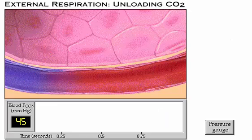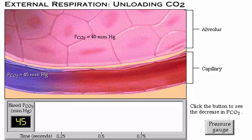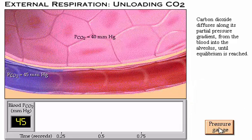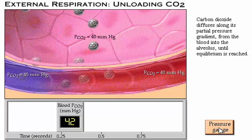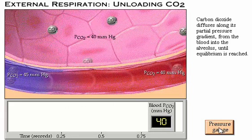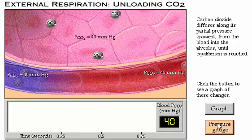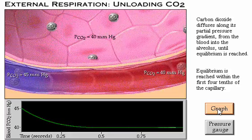Now let's look at the unloading of carbon dioxide from the blood into the alveolus. The PCO2 of the alveolar air is 40 millimeters of mercury. At rest, the PCO2 of the blood entering the pulmonary capillaries is 45 millimeters of mercury. Click the button to see the PCO2 decrease as blood flows past the alveolus. Carbon dioxide diffuses along its partial pressure gradient from the blood into the alveolus until equilibrium is reached. The PCO2 of the blood has decreased to 40 millimeters of mercury. As indicated in the graph, equilibrium is reached rapidly within the first four-tenths of the pulmonary capillary.